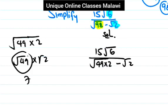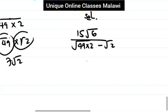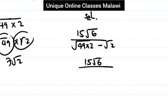Now the square root of 49 times 2 can be written as the square root of 49, times the square root of 2. Remember the square root of 49 is 7, because 7 times 7 is 49. So we now have 15 times the square root of 16, divided by 7 times the square root of 2, minus the square root of 2.